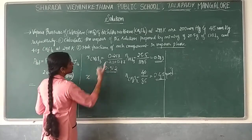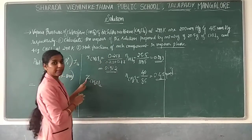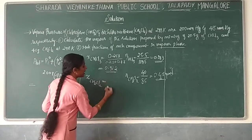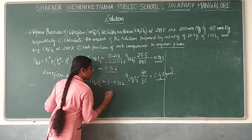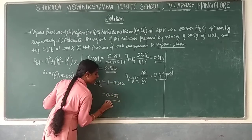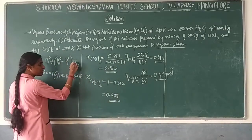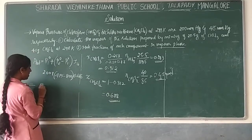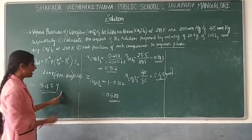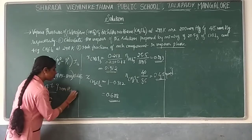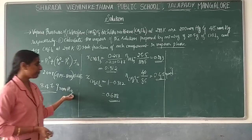Now find the mole fraction of dichloromethane (CH2Cl2), which is X2. X2 = 1 minus X1 = 1 minus 0.312 = 0.688. Substituting X2 = 0.688 into the total pressure formula: P_total = 200 + (450 - 200) × 0.688. Calculating gives a total vapor pressure of approximately 347.9 mmHg. This is the total pressure expressed in mmHg.